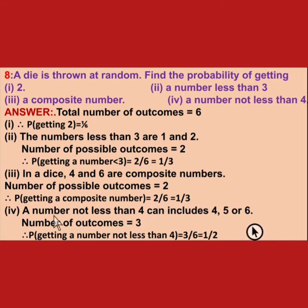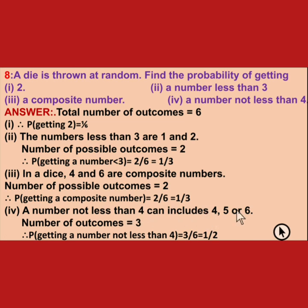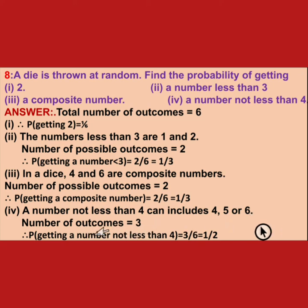Next, a number not less than 4 means equal to 4 or greater than 4 — so 4, 5, and 6. There are 3 such numbers. Probability of getting a number not less than 4 is 3 upon 6, that means 1 upon 2.